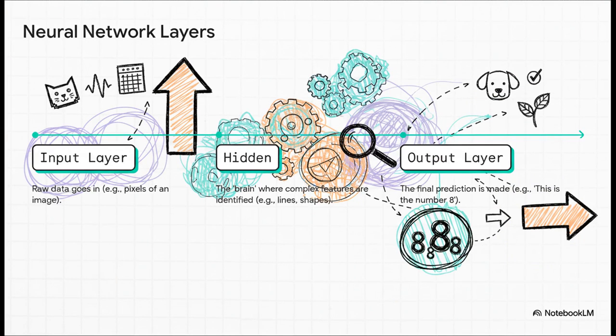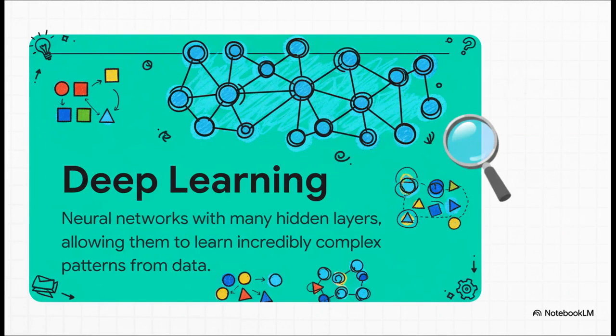A neural network is made of layers. You feed it the raw data, like all the pixels in a picture, at the input layer. Then it goes through these hidden layers. This is where the magic happens. The first layer might just learn to spot simple edges. The next layer combines those edges to find shapes. The next one combines shapes to find things like an eye or a nose. Until finally, the output layer puts it all together and says, yep, that's a cat.